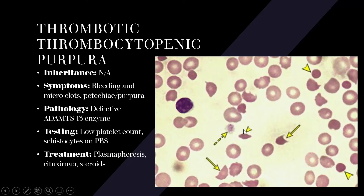These microthromboses can cause clots in arteries, veins, and strokes. Testing shows a low platelet count because platelets are consumed into clots and won't appear on CBC. Schistocytes on PBS are a crucial finding. You may also see elevated bilirubin and low haptoglobin due to hemolysis. Treatment is plasmapheresis, rituximab, or steroids — those are the big three to know for the exam.